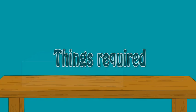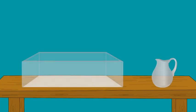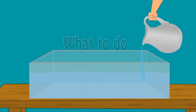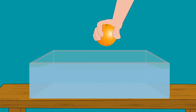Things required: a deep bowl, water, an unpeeled orange. What to do? Fill three-fourths of the bowl with water. Put the unpeeled orange in the water and observe what happens to the orange.